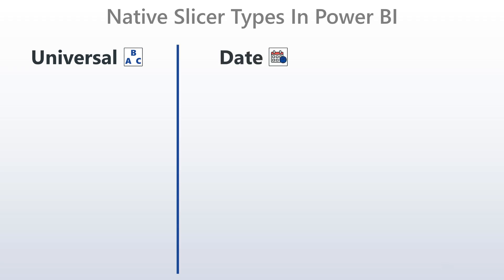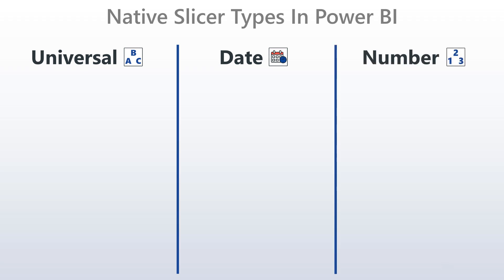Let's consider the types of native slicers available in Power BI Desktop as three categories. The first category, universal, is a slicer type that can be used with columns of any data type. The second category, date, includes slicer types that can only be used with date data type columns. Lastly, there's the number type slicers, which can only be used with columns defined as whole, decimal, or currency values.